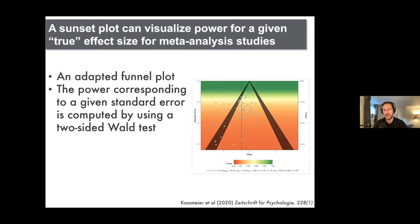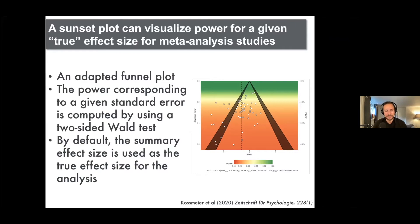Looking at this figure, you can actually see that there is quite a range of statistical power. There are a few studies which are around that 80% mark, but quite a lot of the studies in this example meta-analysis have quite low statistical power. By default, you can specify what the true effect size is for the sunset plots, but by default it uses the summary effect size.